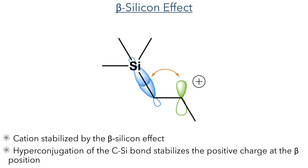This Sakurai reaction works due to the beta-silicon effect. This effect stabilizes cations in the beta position relative to the silicon atom. This is due to the hyperconjugation that can occur between the carbon-silicon bond, which is adjacent to the empty p-orbital and the cation. This stabilizes the charge and increases the nucleophilicity of the alkene.